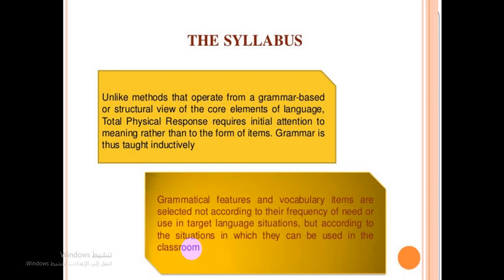What is the type of syllabus according to the total physical response method? The syllabus in total physical response is predictable from the exercises used in class — a sentence-based syllabus with grammatical and lexical criteria being primary in selecting teaching items. Total physical response requires initial attention to meaning rather than to the form of items, so grammar is taught inductively.